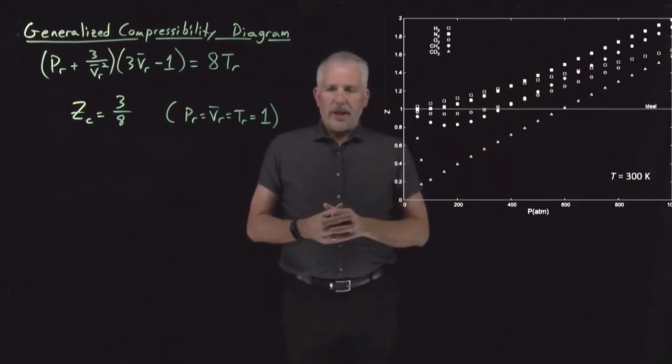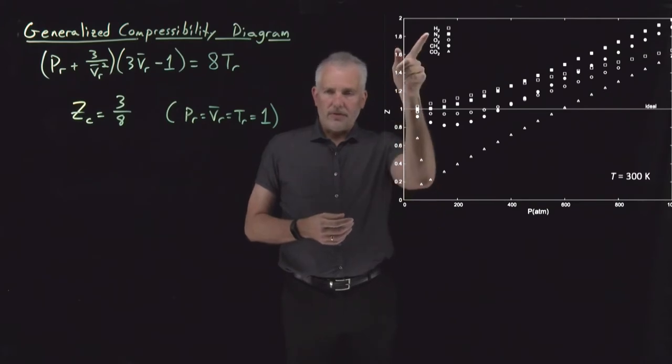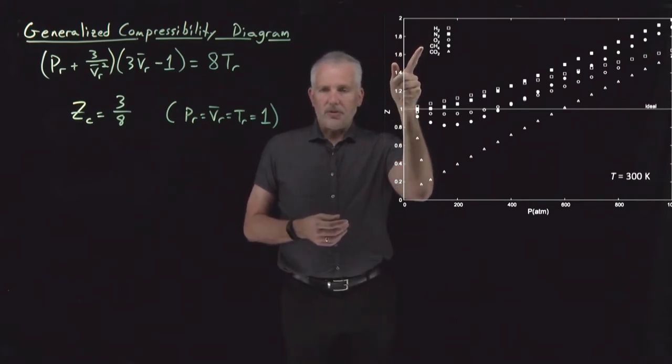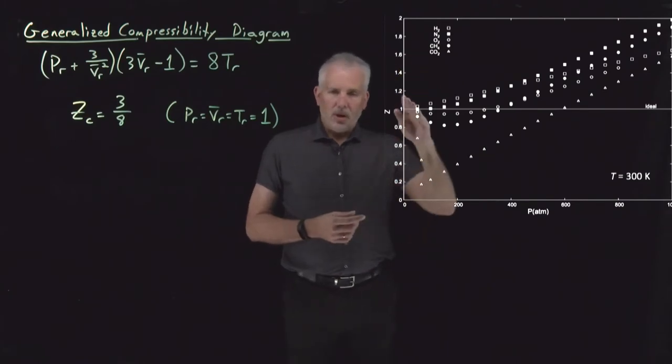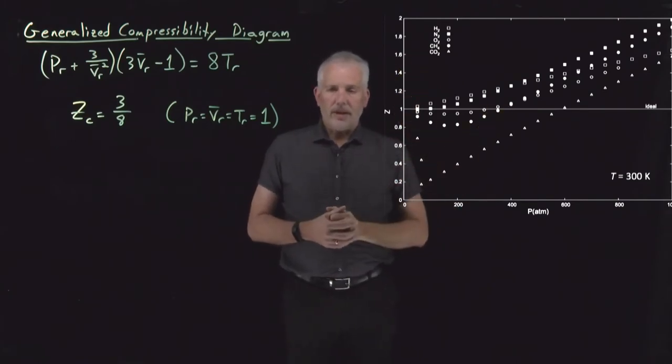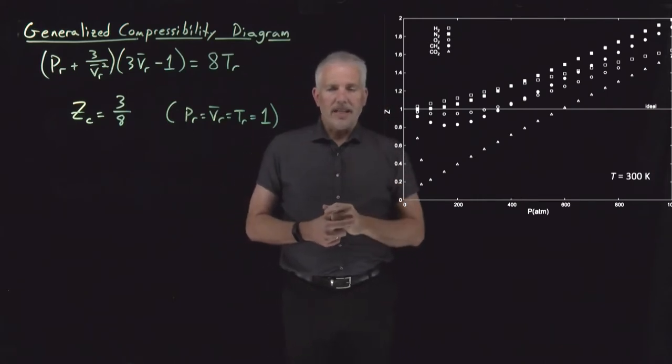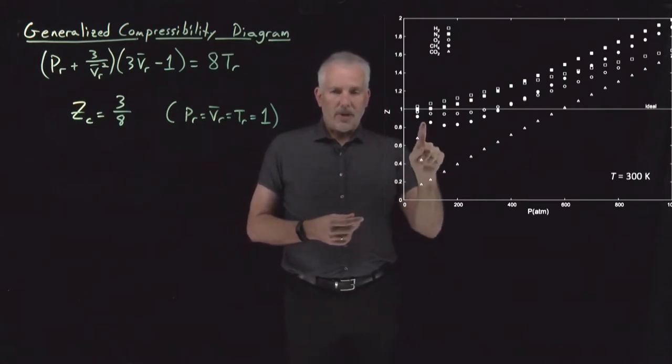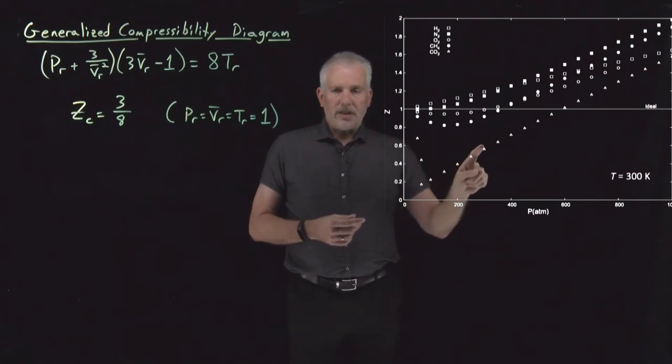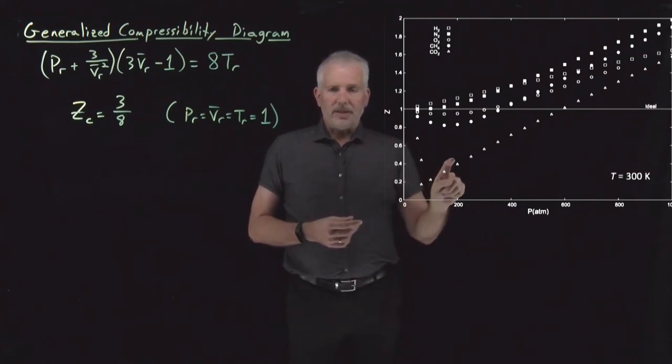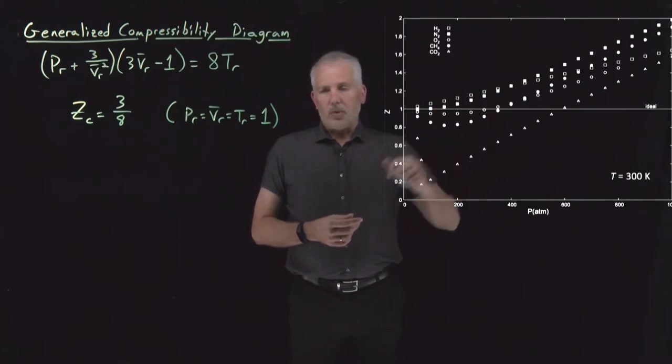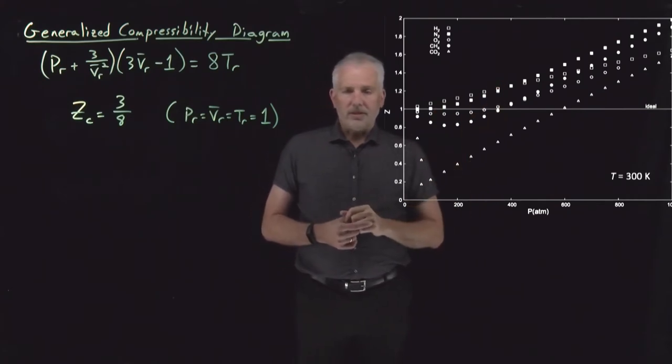So as you'd expect, these graphs look different for all sorts of different gases. So gases H2, N2, O2, methane, and CO2 all behave differently on this graph. They have varying degrees of non-ideality, again dominated perhaps by intermolecular interactions for the more strongly interacting gases like CO2 or dominated more by finite molecular volume for the more weakly interacting gases, especially at high pressure.